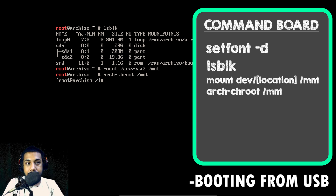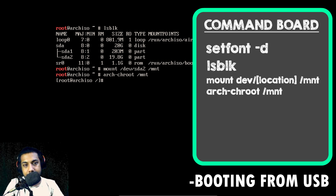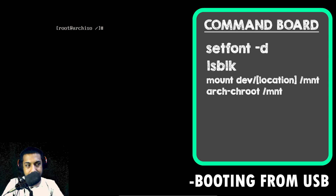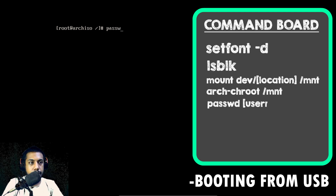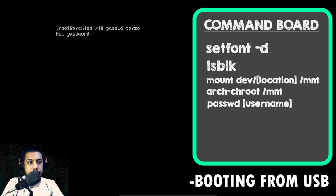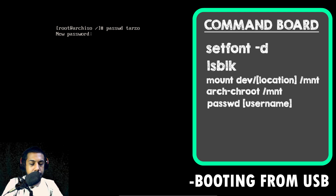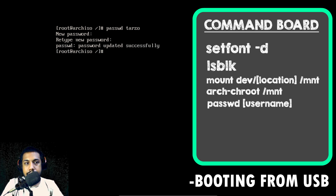Now we're booted into our root partition — this is the root partition of your existing OS, so just be careful here. Now what we can do to change our user password is type `passwd` and then our username, then hit enter. You can see it will ask for a new password. I'll just type in a password here — and it says password updated successfully, so it changed your password.